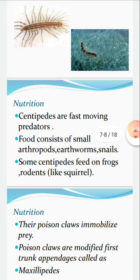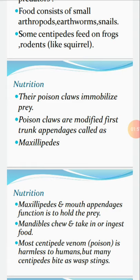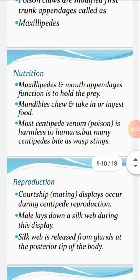Centipedes are fast moving predators. Their food consists of small arthropods, earthworms, and snails. Some centipedes feed on frogs and rodents like squirrels. Their poison claws immobilize prey. Poison claws are modified first trunk appendages called maxillipedes. Maxillipedes and mouth appendages function to hold the prey, while mandibles chew and ingest food.